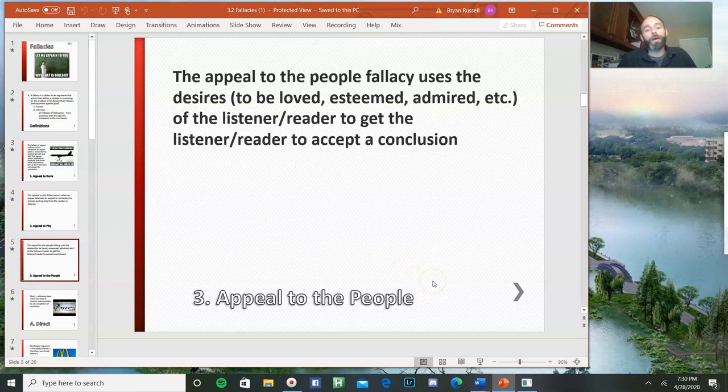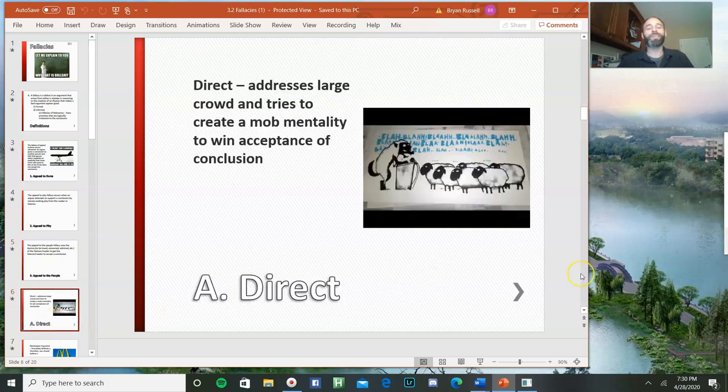Then we get a few varieties all under the umbrella of appeal to the people. The appeal to the people fallacy uses the desires, for example, to be loved, esteemed, or admired of the listener or reader to get them to accept a conclusion. So let's look at some varieties of that. The first is the direct appeal to the people. When somebody addresses a large crowd and tries to create a mob mentality to win acceptance of whatever conclusion they're pitching, that would be the example of a direct appeal to the people.